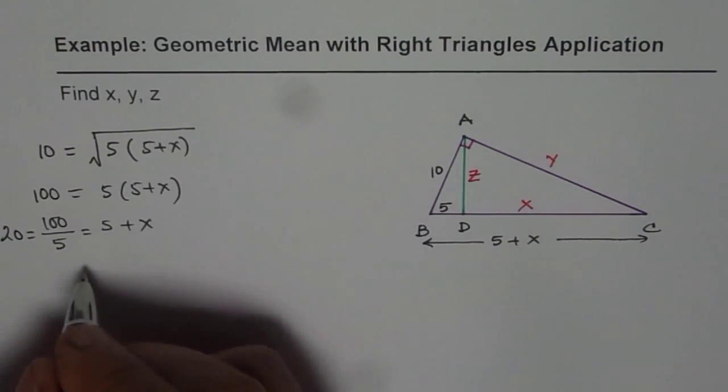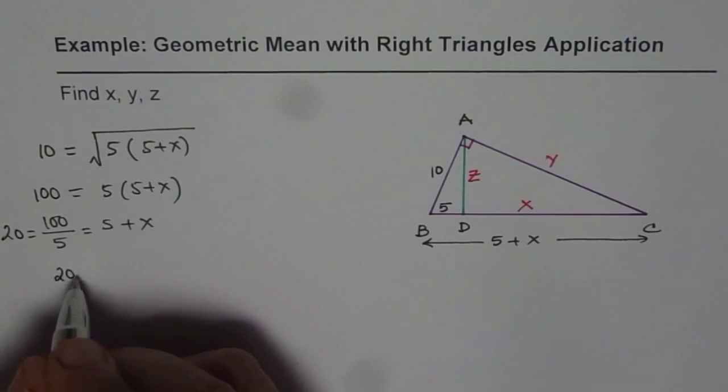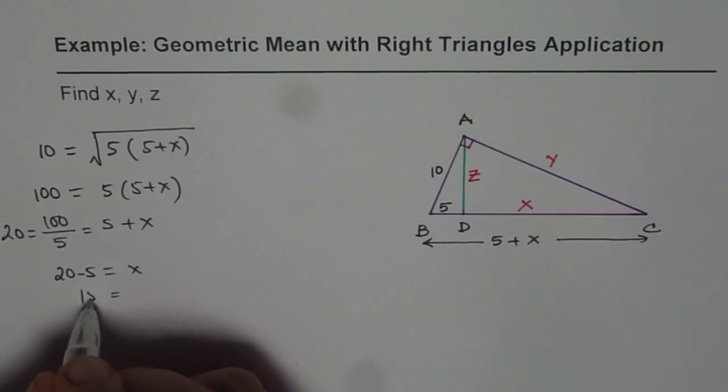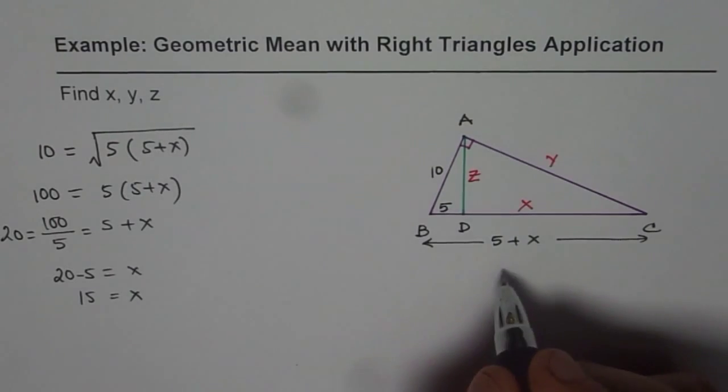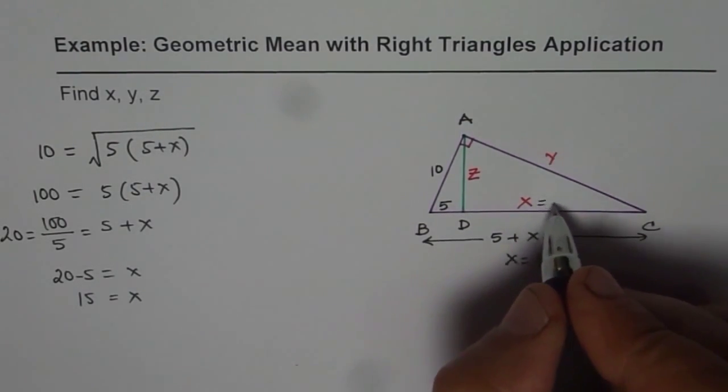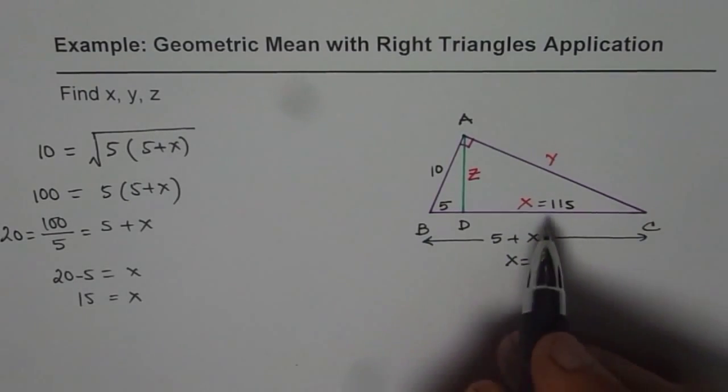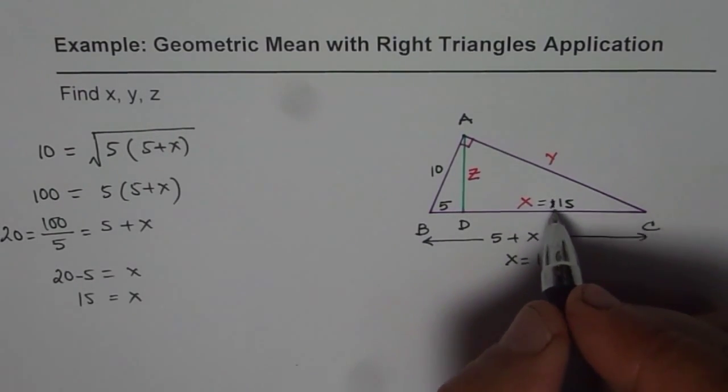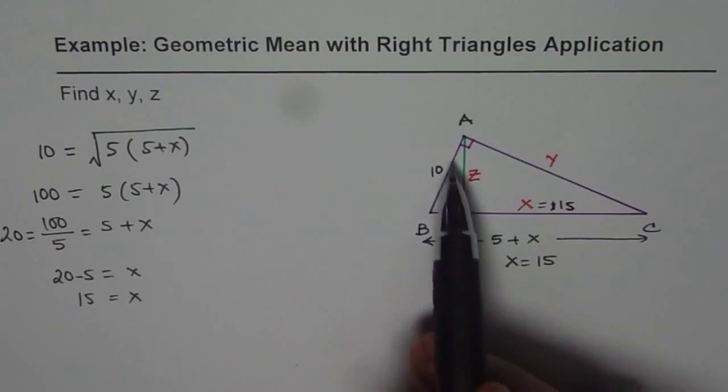Now x equals 20 minus 5, so x is 15 for us. So we get x equals 15. Let's write it here. Now once we know x equals 15 we can find the altitude.